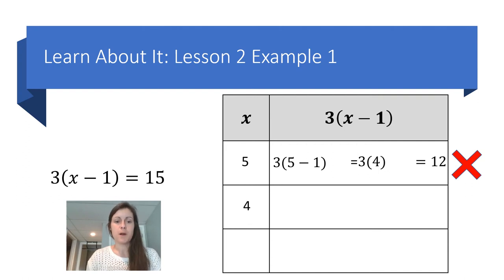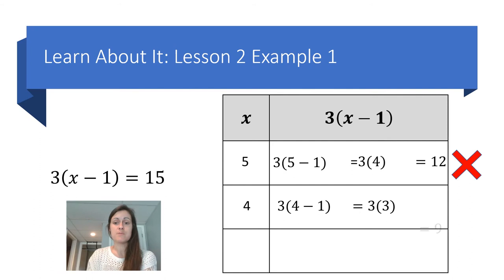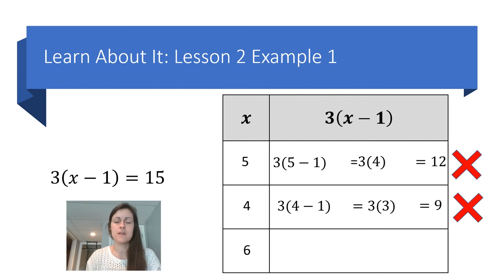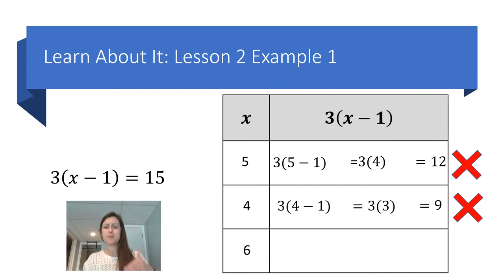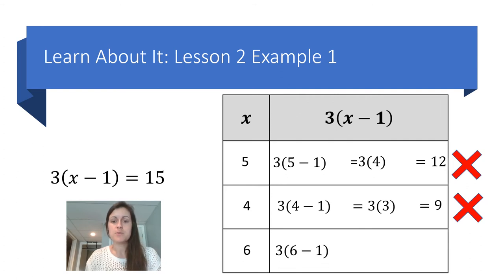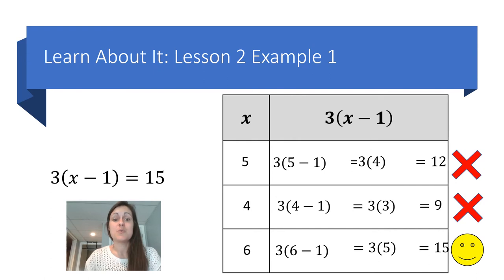Let's try x equals 4. Substituting into 3 times the quantity x minus 1: I get 3 times 3, which is 9 — that's not my target value of 15, so x equals 4 is not a solution. Let's try 6: when I tried 5 I got 12, which was closer to 15 than the result of 9 from x equals 4. Substituting 6: 3 times 5 equals 15 — so x equals 6 is the solution. Beware: the solution is the x value, which is 6, not 15.